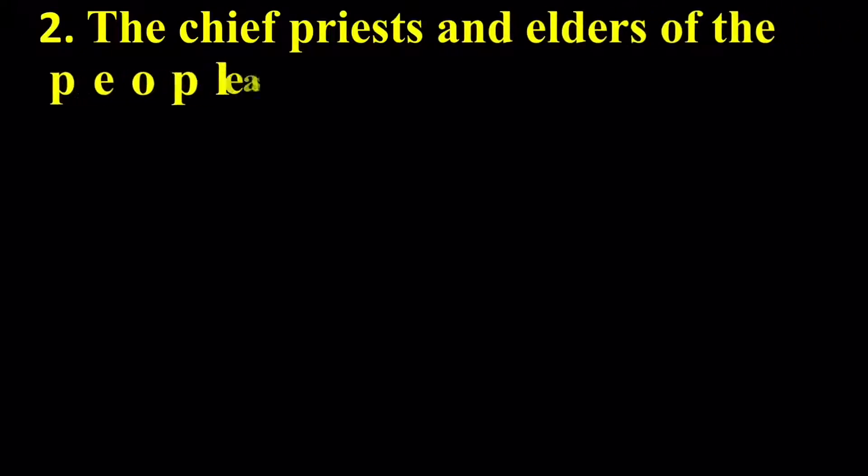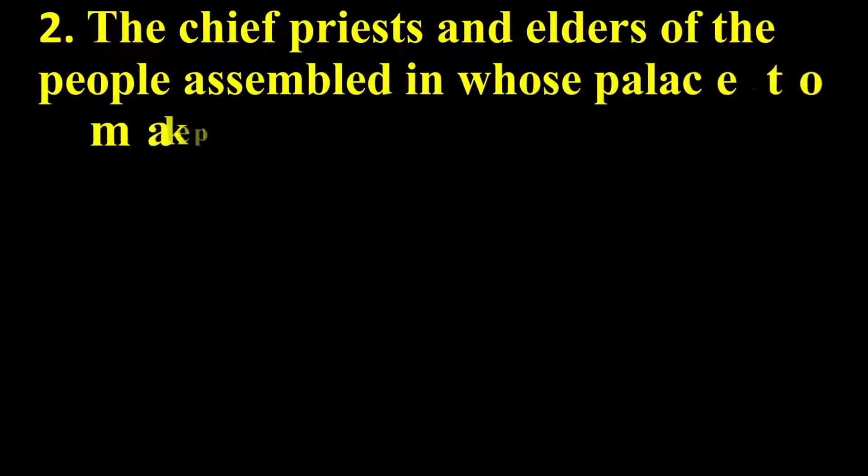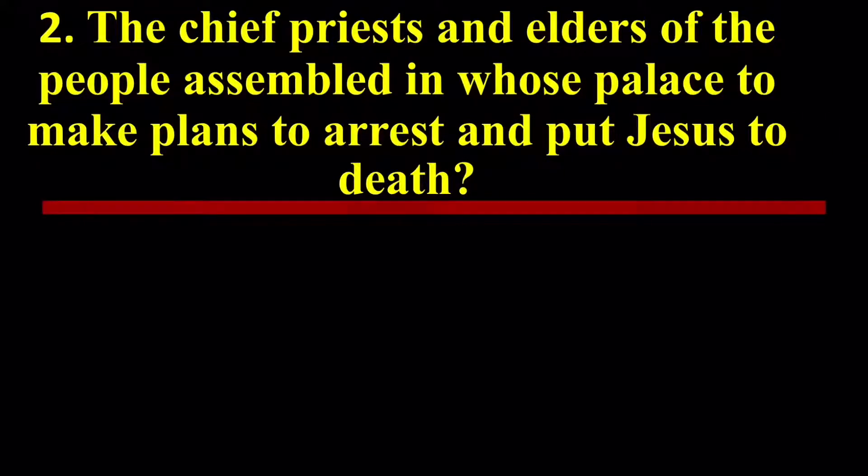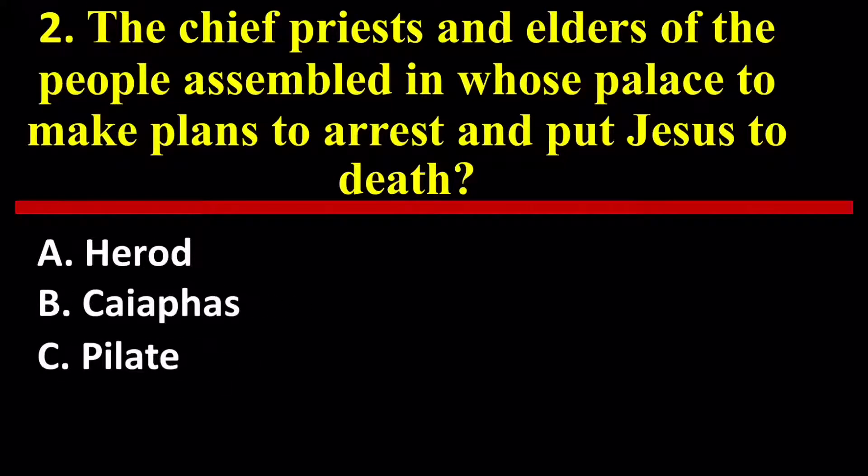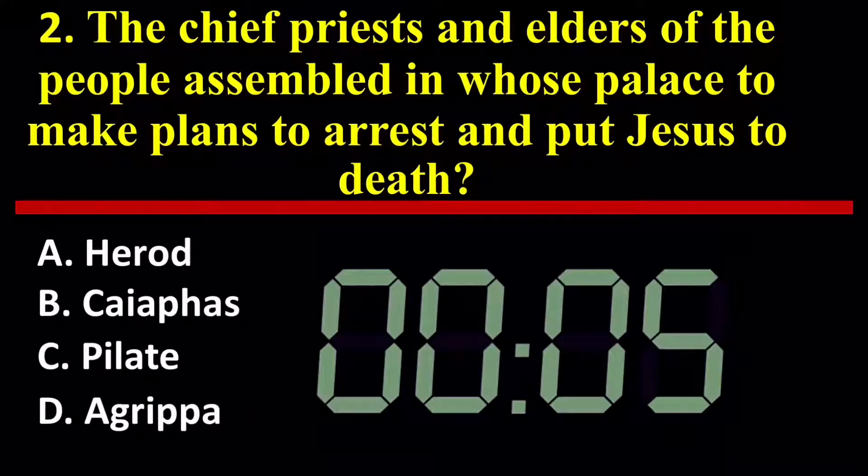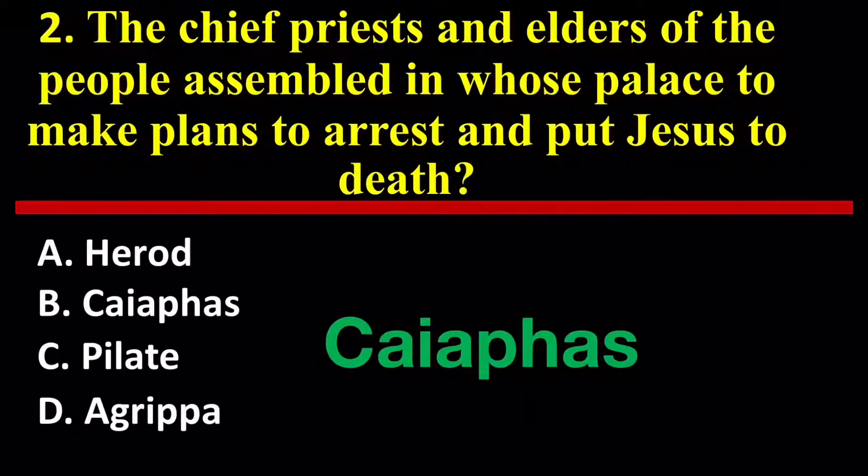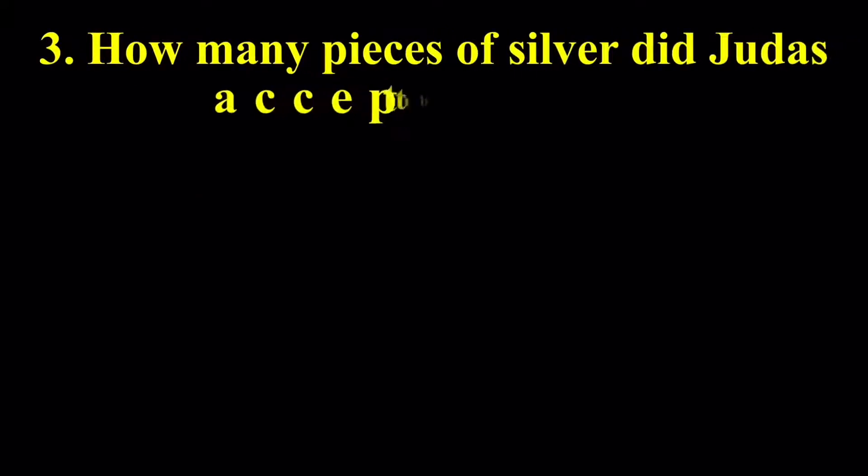Question number 2: The chief priests and elders of the people assembled in whose palace to make plans to arrest and put Jesus to death? Herod, Caiaphas, Pilate, Agrippa. Caiaphas is the right answer. Question number 3: How many pieces of silver did Judas accept to betray Jesus?